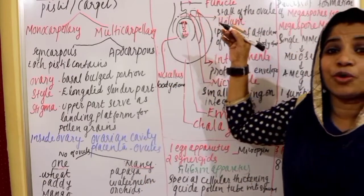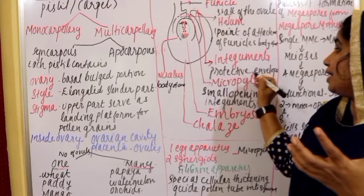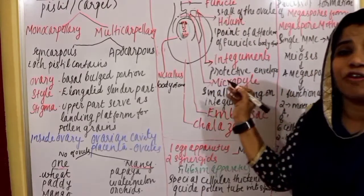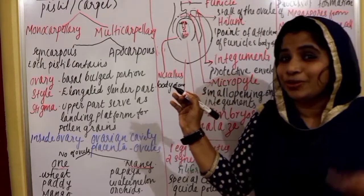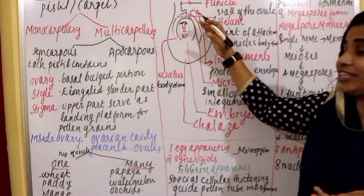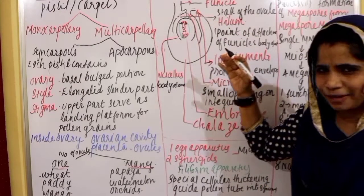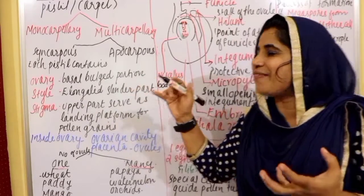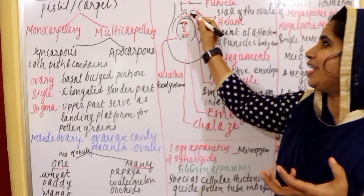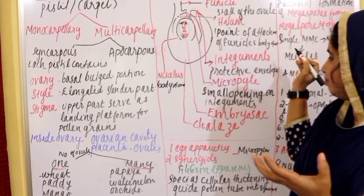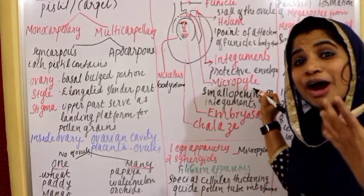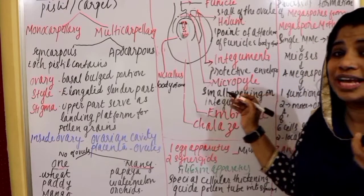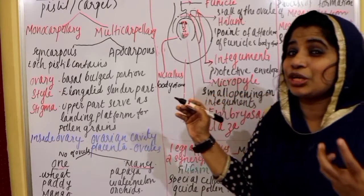The nucellus is covered by one or more protective coverings called integuments. These integuments leave an opening known as the micropyle.